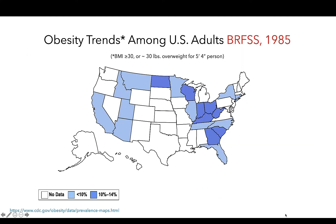Here we see data from the Behavioral Risk Factor Surveillance System, which collects data on a number of health metrics for Americans. These maps are available on the CDC's website and can be found in the link referenced on the lower left-hand corner. These are data on obesity, classified as BMI at or above 30 kilograms per meter square. For reference, this would be an individual with a height of 5 feet 4 inches who is around 30 pounds overweight.